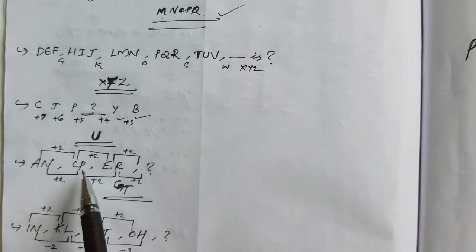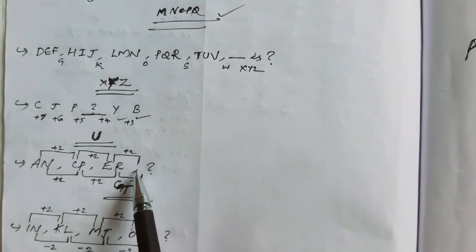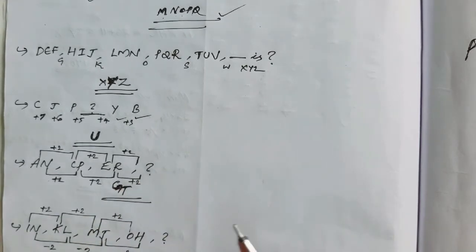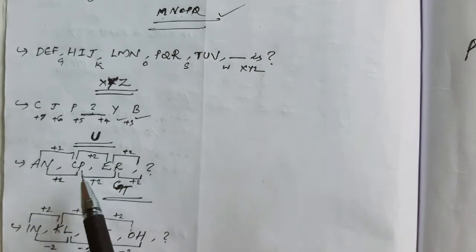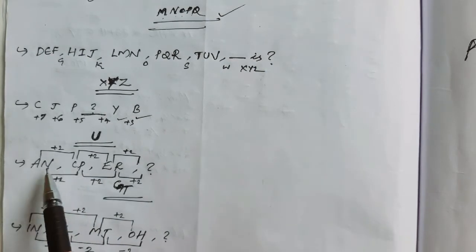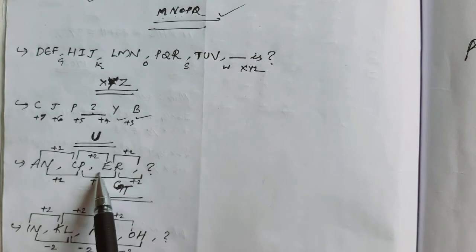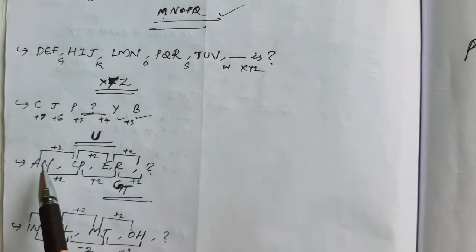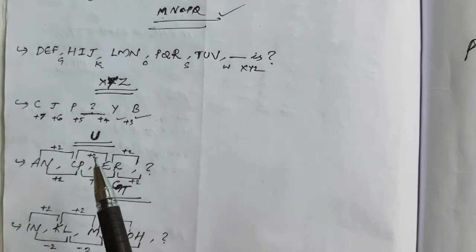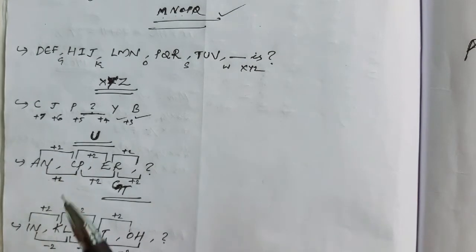The answer is a continuous letter. Looking at the answer options — C, P, ER — we have some confirmation on the answer. The first letter and the next term match the first letter in our solution.